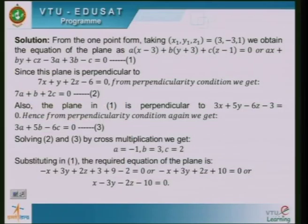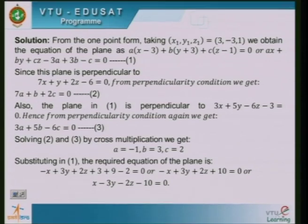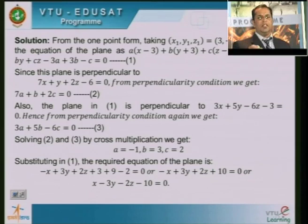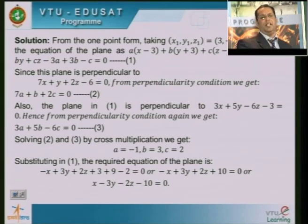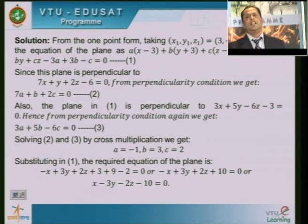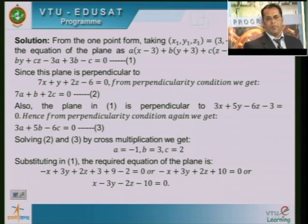Substituting a equal to minus 1, b equal to 3, c equal to 2 back into equation 1, the required equation of the plane is x minus 3y minus 2z minus 10 equal to 0. You can verify this by substituting the given point (3, −3, 1) into this equation.